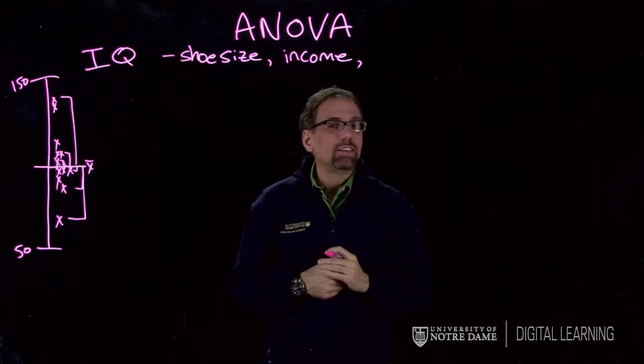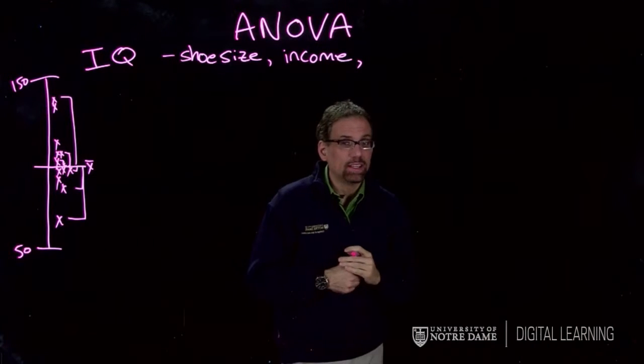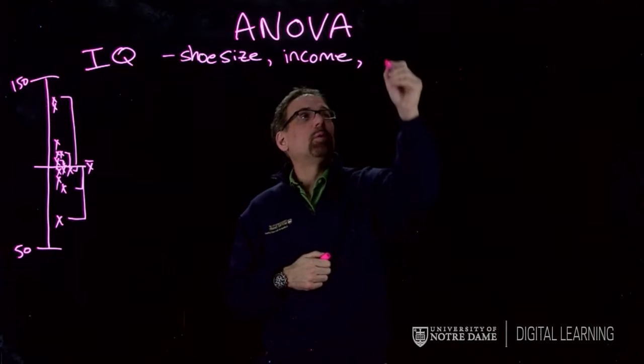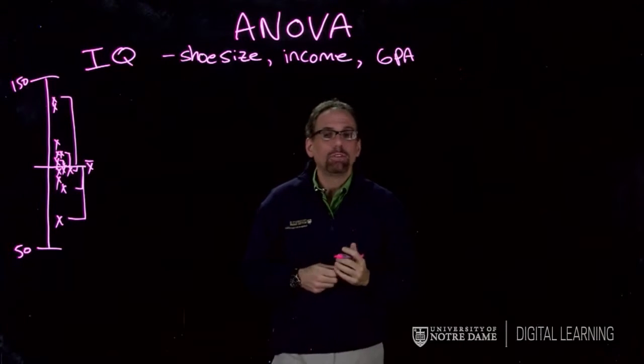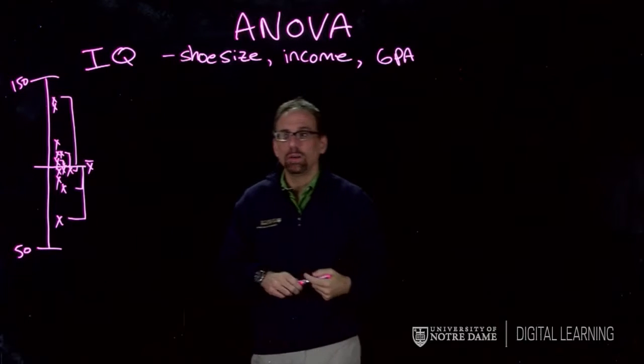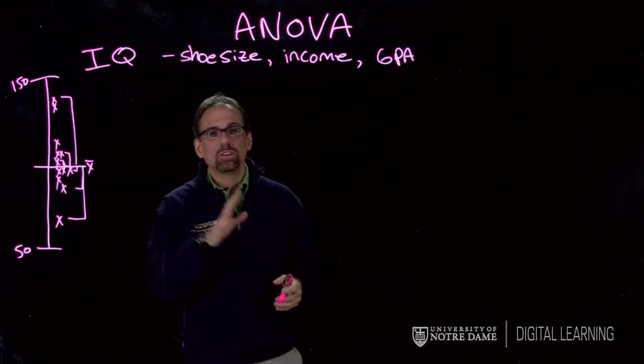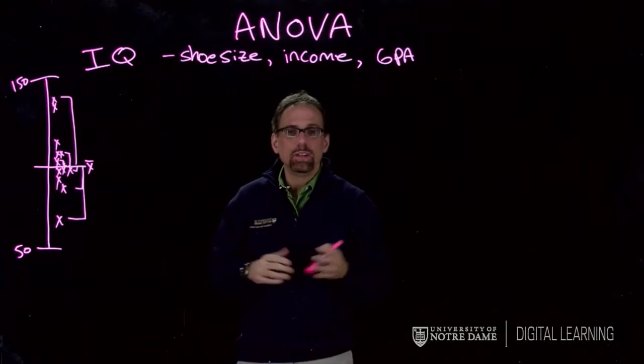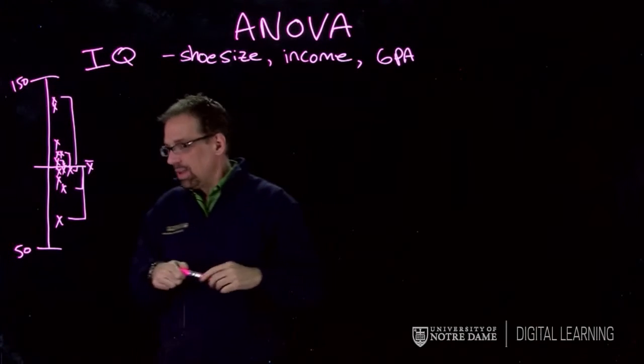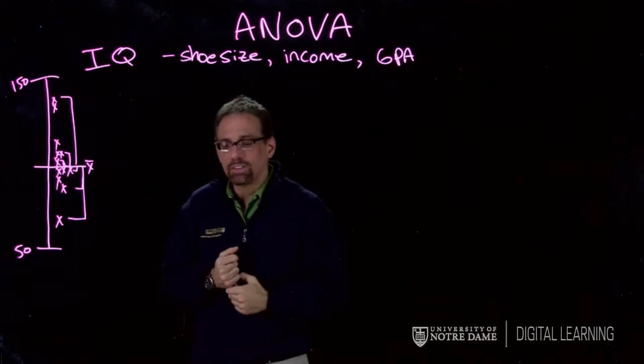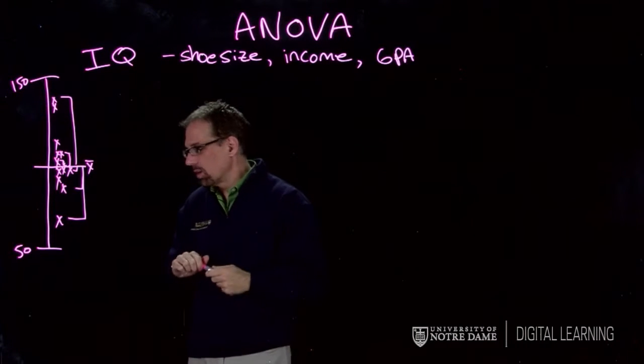So, you know, we think that people who are smarter in general might make more income than people who aren't as smart. And then, last, something that we think would be really highly related to IQ would be your grade point average. So how did you do in school? You would think that would have a really tight relationship with IQ. All right, so let's just take those three and think about them on little charts, and that will help us think about how this kind of analysis of variance kind of thing might work.